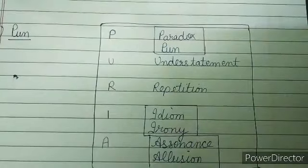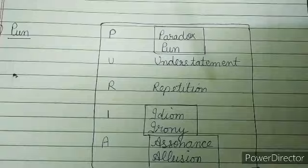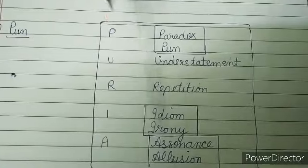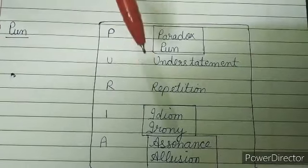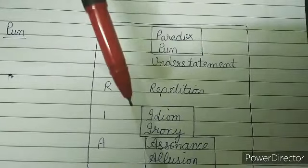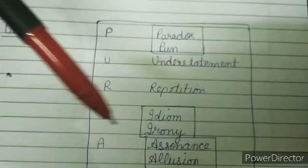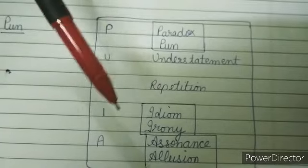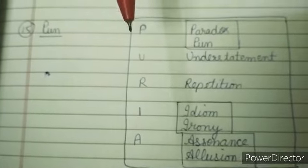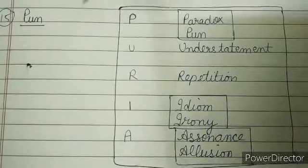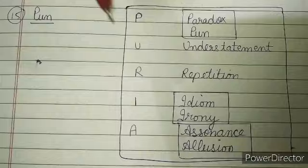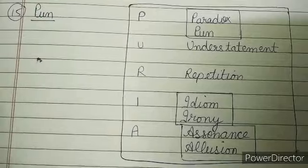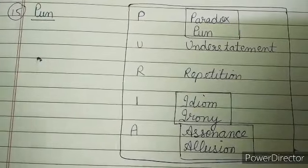Let's recall all of this. Paradox: self-contradicting statements. Pun: making fun of something, like comic effect. Understatement: making something less important — totally opposite of hyperbole. Repetition: two or more words or phrases repeating again and again. Idiom: expressions with common usage meaning that differs from literal translation. Irony: conveying the opposite meaning. Assonance: vowel sounds repeating. Allusion: comparison with a personality or myth.